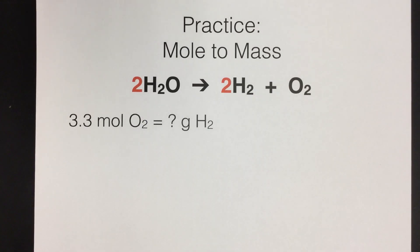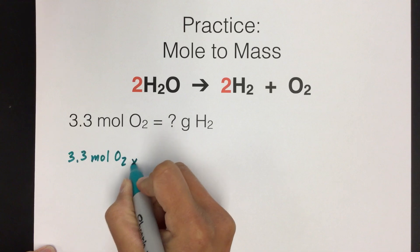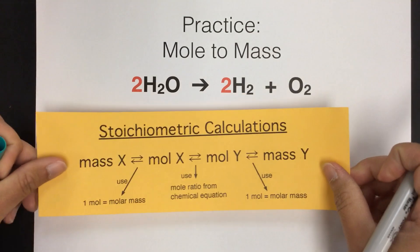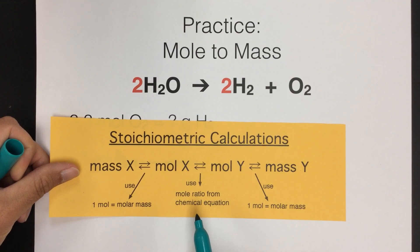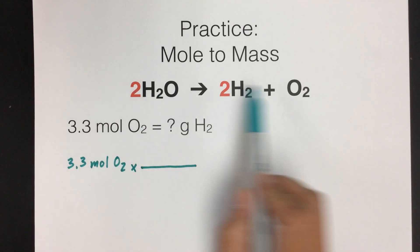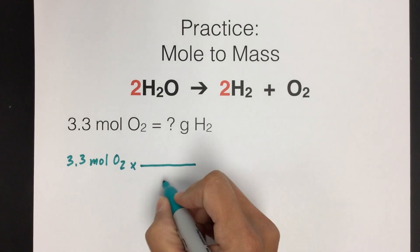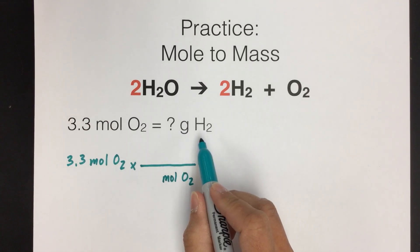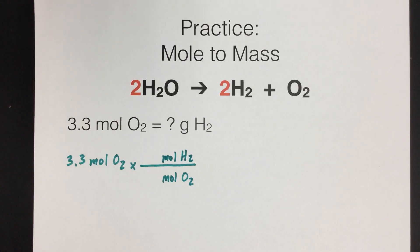We're going to start out with the number given to us: 3.3 moles of O2. Then we're going to set up a conversion factor using dimensional analysis. To get from moles of one thing to moles of another, we need to use the mole ratio from the chemical equation. In any stoichiometry problem, we need a balanced chemical equation that tells us the relationship between different substances. Moles of O2 goes in the bottom because we need it to cancel, and since we're going to grams of H2, we first convert to moles of H2. This is our mole ratio.